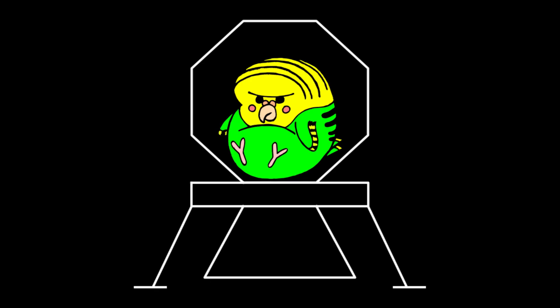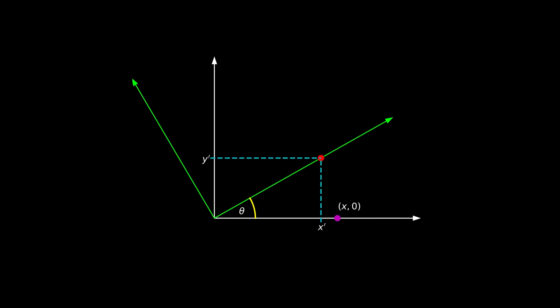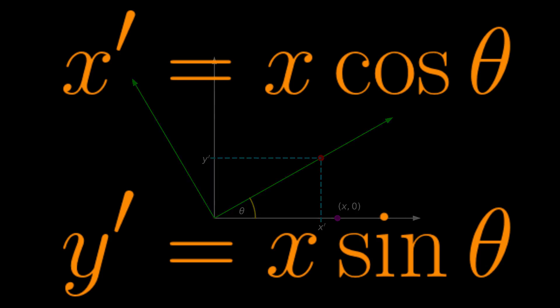Now we've done that, we've just got to get it to go roundy-round. To get our lander to spin, we're going to need to use a bit more maths than just adding and taking away. We're going to have to use trigonometry — but it's not as bad as it sounds. Let's start with the simplest example: a point on the x-axis. Let's rotate our axes around the origin by theta degrees, which gives us this, where x-dash and y-dash are the rotated coordinates. From the geometry of the problem, we can see that x-dash equals x cos theta and y-dash equals x sin theta.